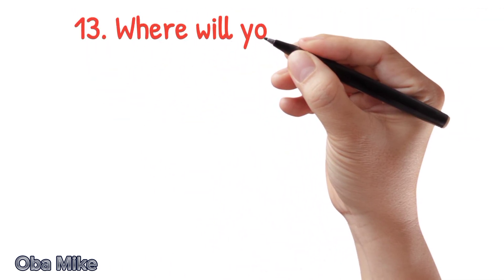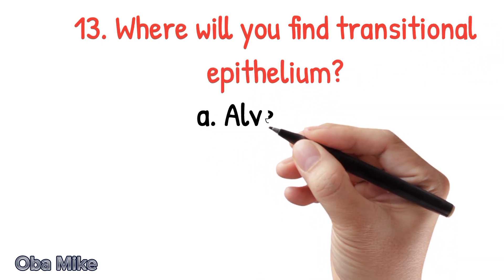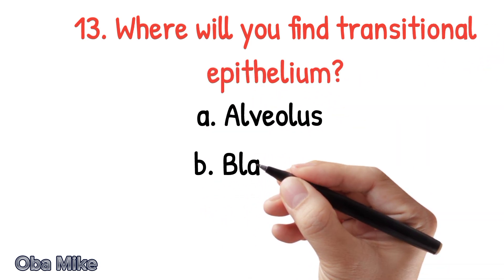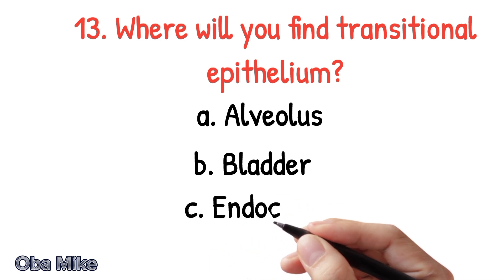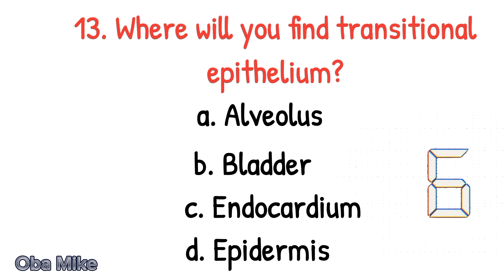Number 13. Where will you find transitional epithelium? A. Alveolus, B. Bladder, C. Endocardium, D. Epidermis. The correct answer is B. Bladder.